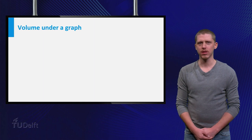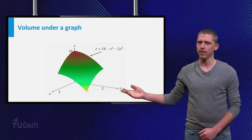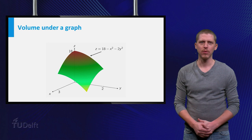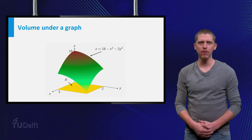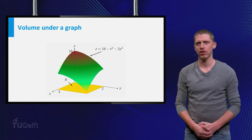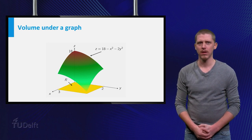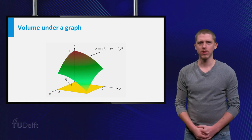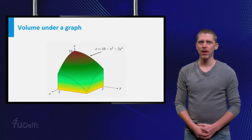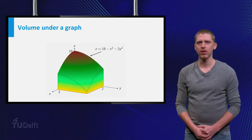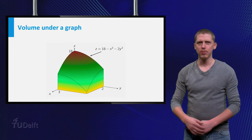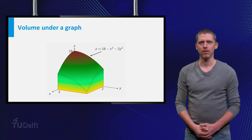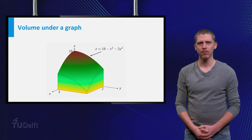Take a look at this example. You only see the part of the graph which lies above the yellow rectangle R, shown here. If we connect the rectangle and the graph of the function, we end up with the solid shown here. Suppose you need to calculate the volume of this solid — how would you do that?